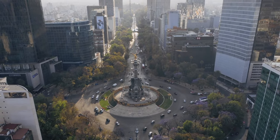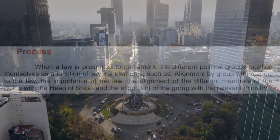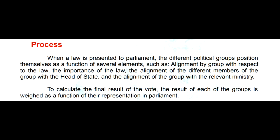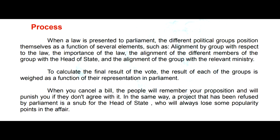According to the manual, the process of how a law is passed is as follows. When a law is presented to parliament, the different political groups position themselves as a function of several elements, such as alignment by group with respect to the law, the importance of the law, the alignment of the different members of the group with the head of state, and the alignment of the group with the relevant ministry. To calculate the final result of the vote, the result of each group is weighed as a function of their representation in parliament. When you cancel a bill, the people will remember your proposition and will punish you if they don't agree with you canceling it. A project that has been refused by parliament is a snub for the head of state, who will always lose some popularity points in the affair.